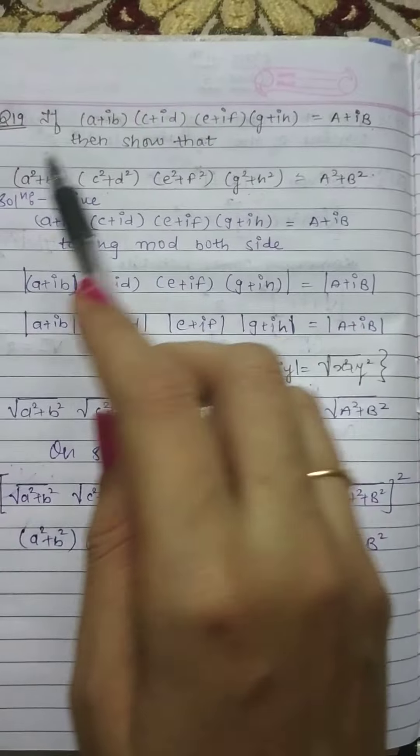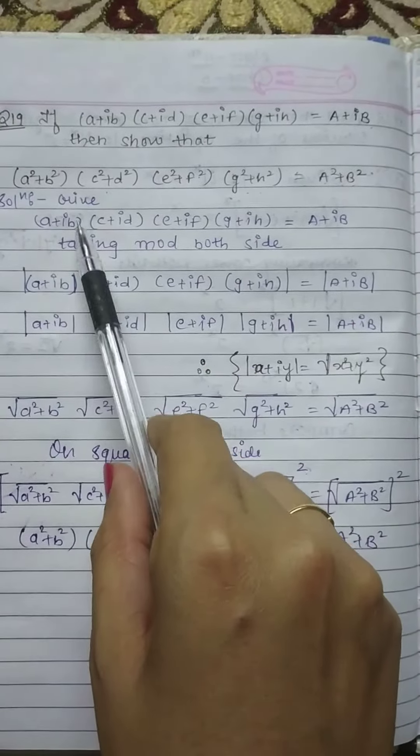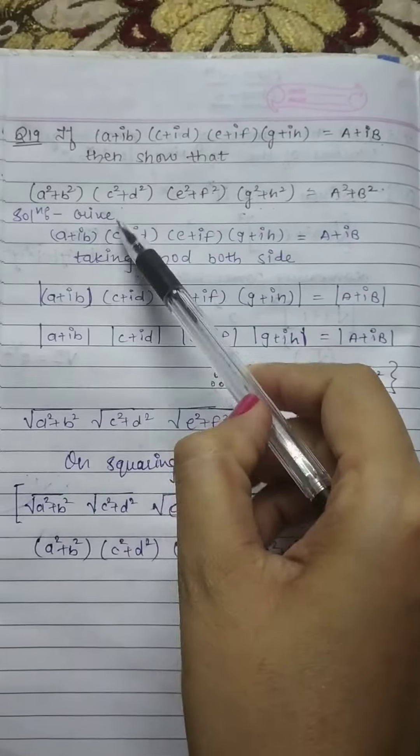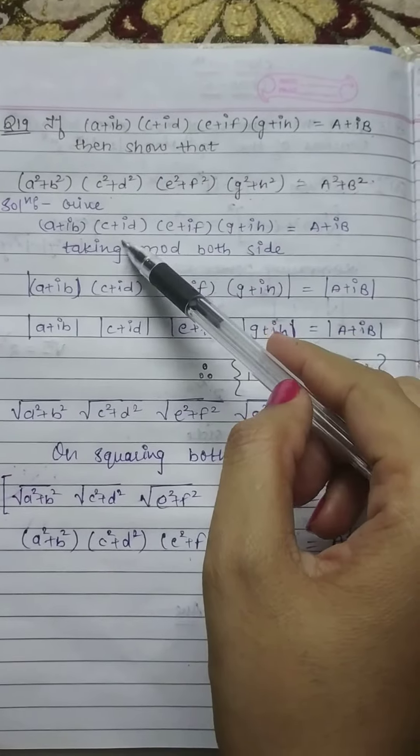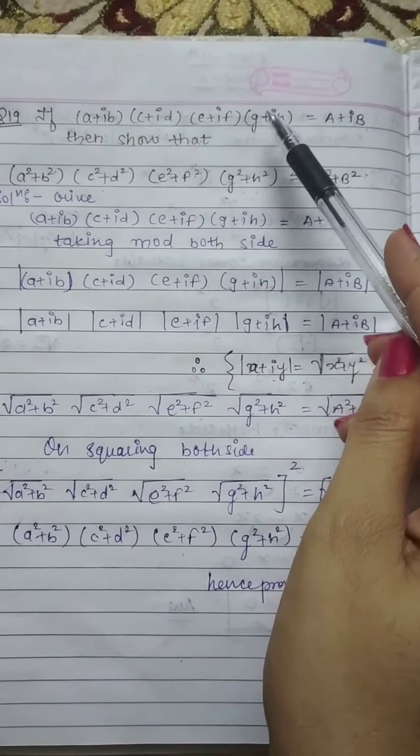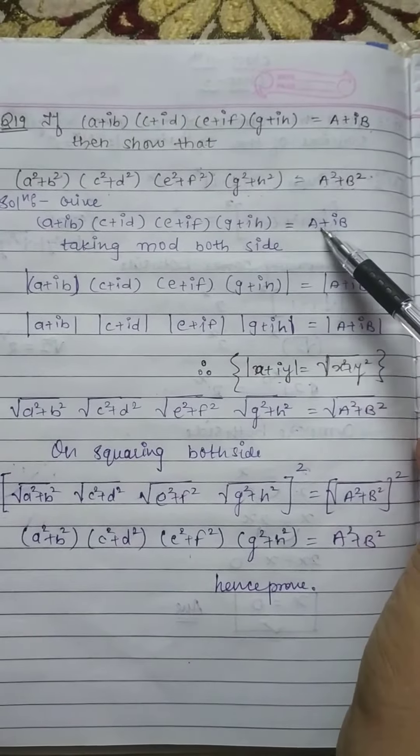Now what value is given? This is given: (A+iB)(C+iD)(E+iF)(G+iH) equals A+iB.